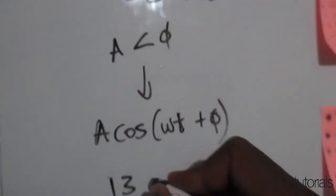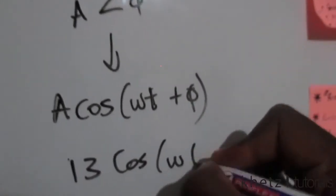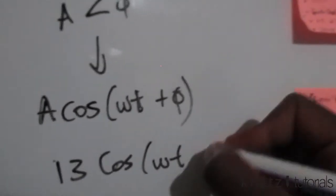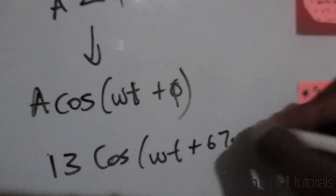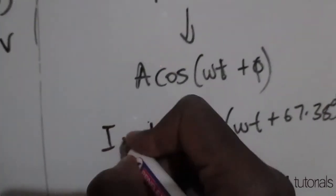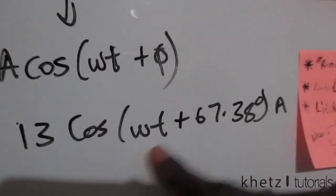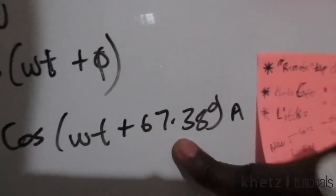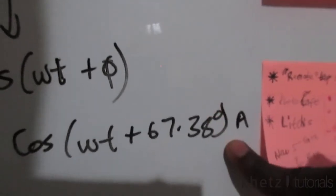Therefore, in this case, our answer or the corresponding sinusoid will be 13cos(ωt + 67.38°), not forgetting the units. So i equals 13cos(ωt + 67.38°).